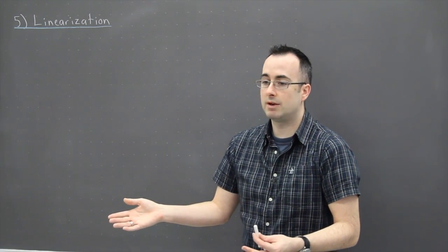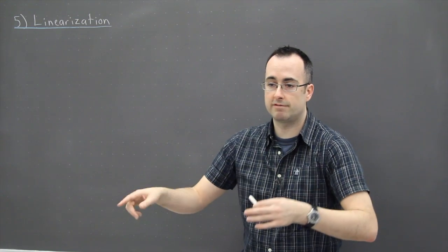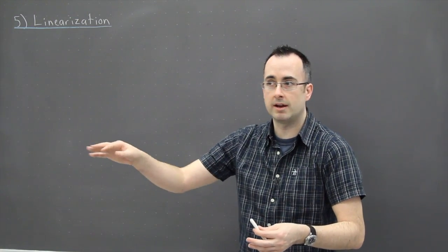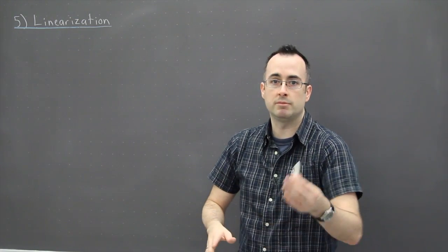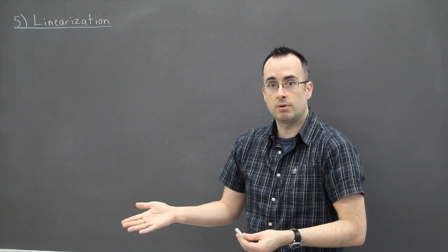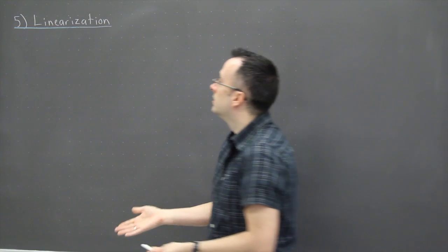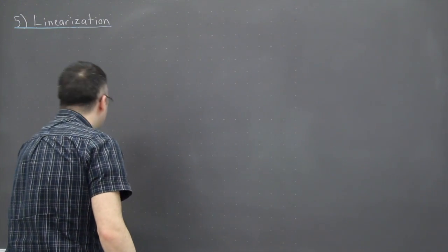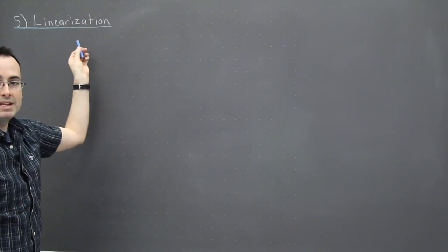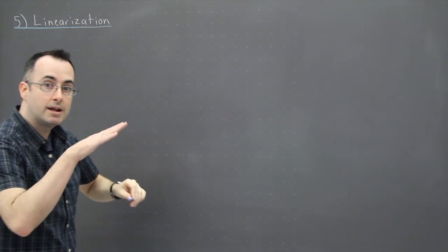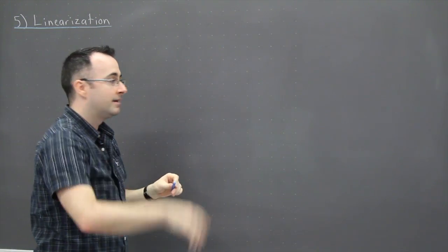For example, they might ask what you could graph against what to get a straight line, and what the slope would be — and this is precisely what we're going to do here. So first of all, linearization just means make something linear, make something like a line.